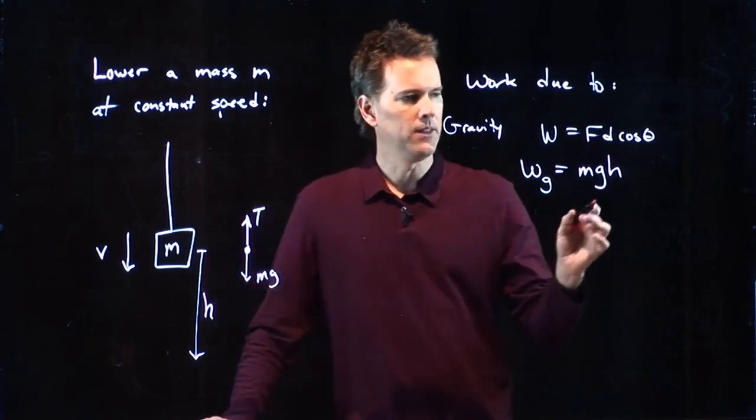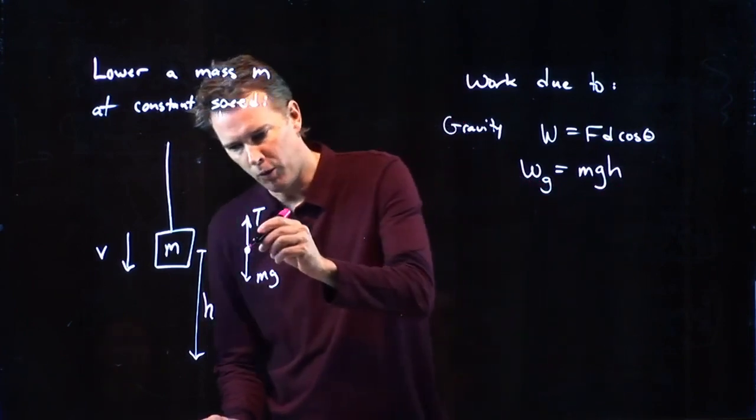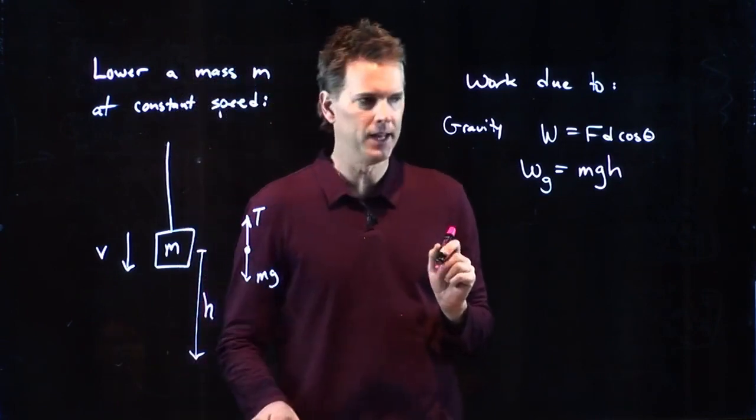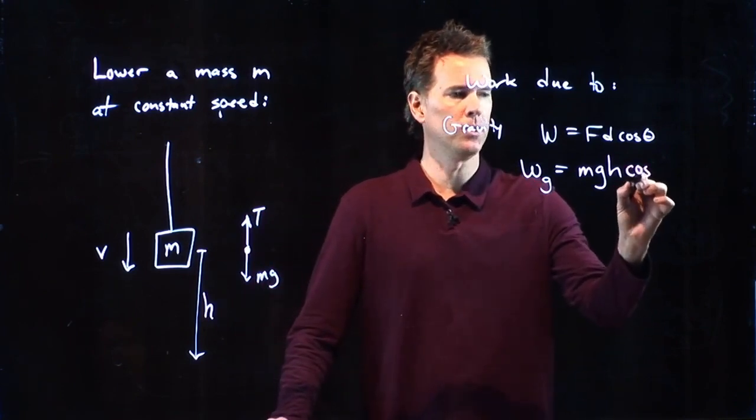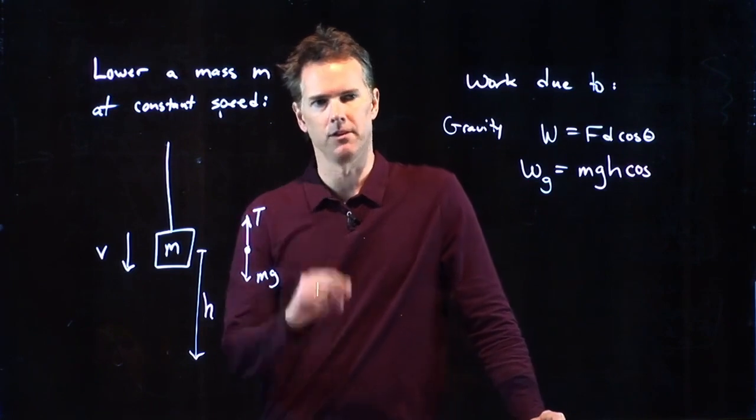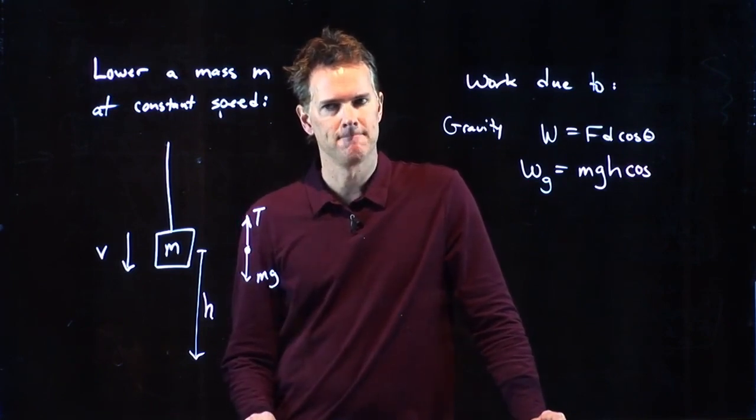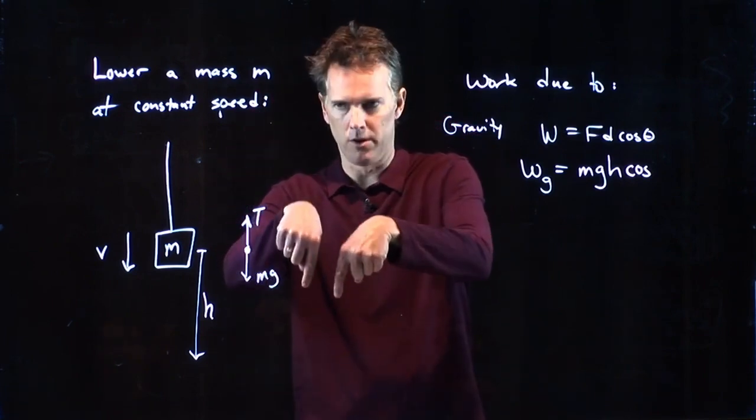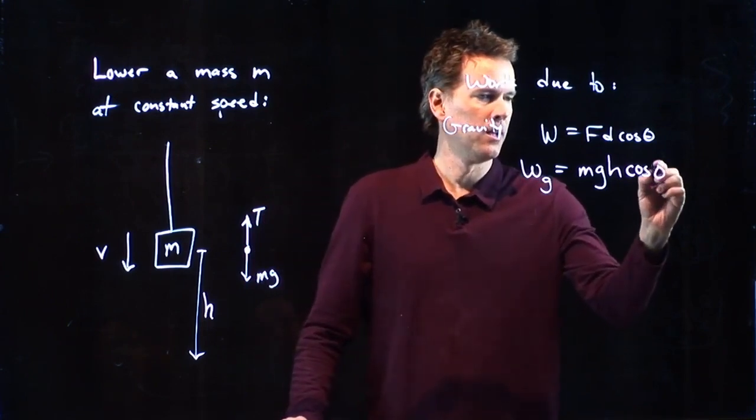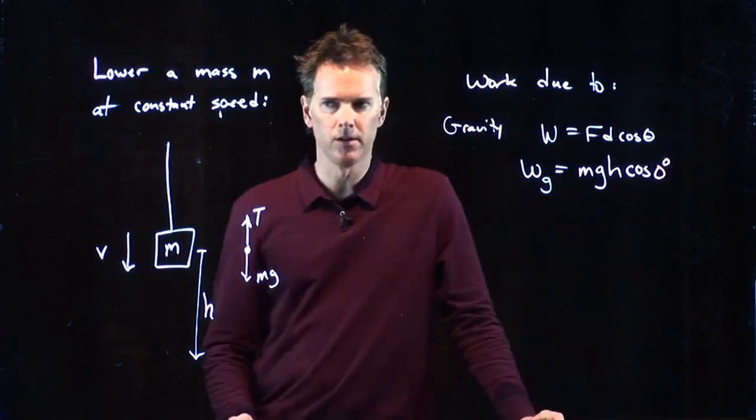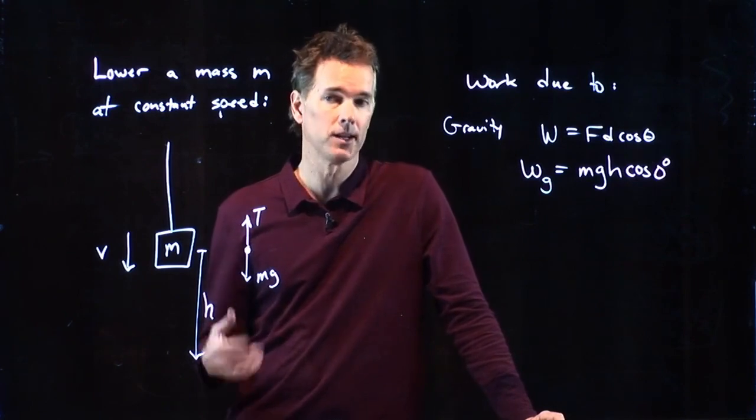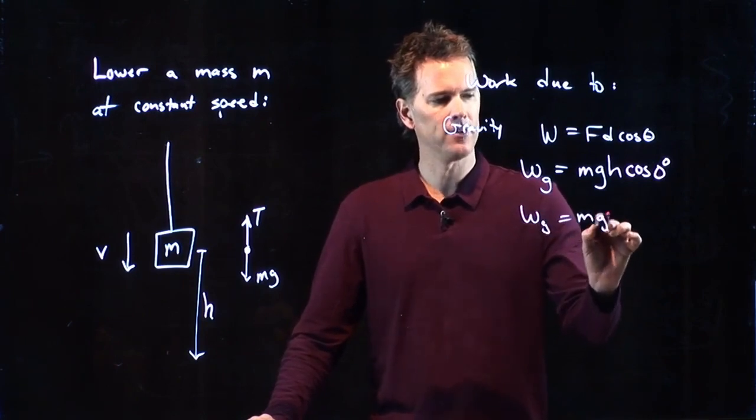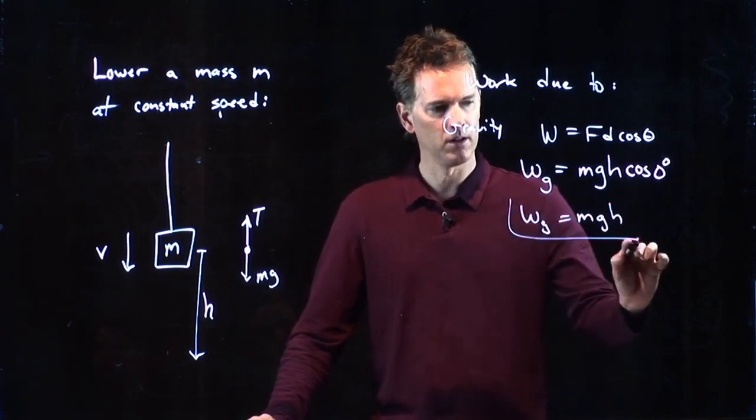So in the case of gravity, we have a force that's down. We have a displacement that is down. So what is the angle between those two? If they are both heading down, they're in the same direction, and so the cosine is zero degrees. It's the angle that we want to use cosine of zero degrees, which is of course, one. So what's the work due to gravity in this case? Mgh.